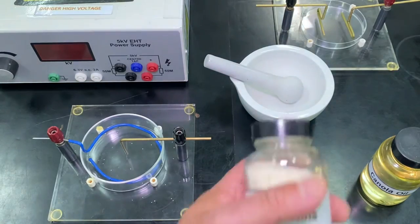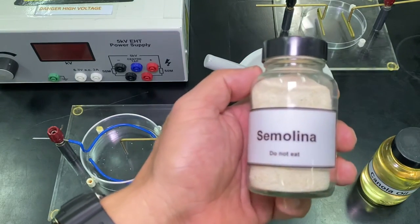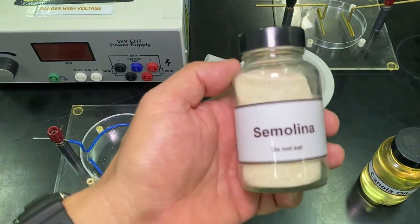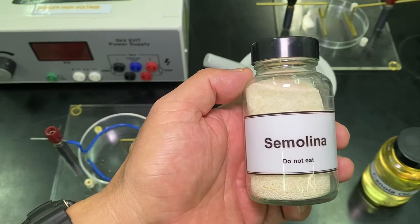And the stuff we're going to use is this stuff here called semolina, it's a type of grain. Do not eat.